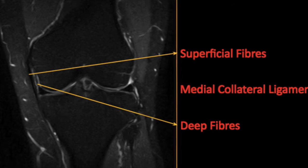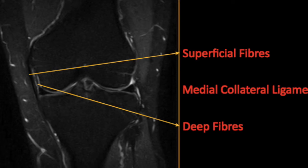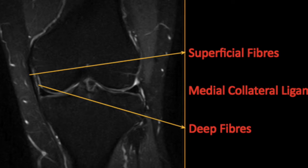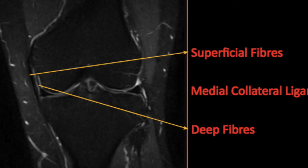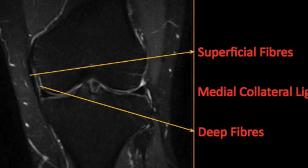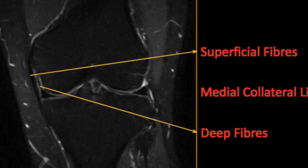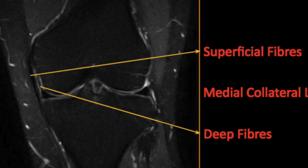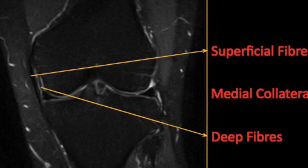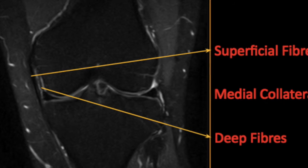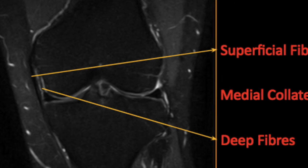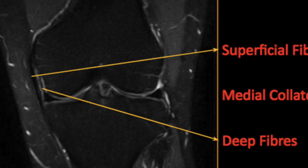We have to remember that crossing on top of the lower part of the MCL is the pes anserinus tendons, with the pes anserinus bursa interposed between the two. The MCL has distinctly two fiber layers — the superficial and the deep fibers. The deep fibers are closely attached to the medial meniscus via the meniscofemoral and meniscotibial ligaments, so meniscal injuries are closely associated with medial collateral ligament injuries on the medial aspect.